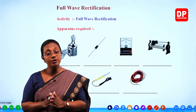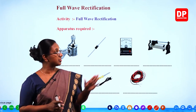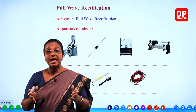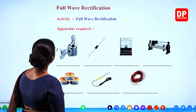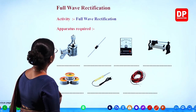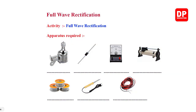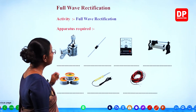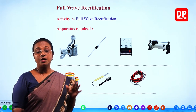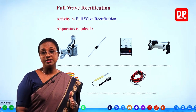To understand full-wave rectification, we will first look at an activity. For this activity, these are the apparatus required. If you look at the picture, you can see a bicycle dynamo. A dry cell or battery produces direct current, but a dynamo produces alternating current. That is why even the current supplied to households is alternating current. Here, the bicycle dynamo provides alternating current.